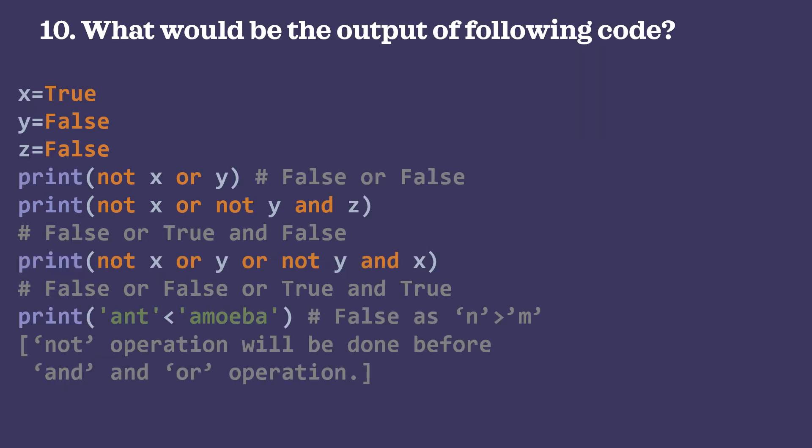Next: x = True, y = False, z = False. print(not x or y). Not x means x is True so not x is False. False or y — y is False — so False or False produces False.